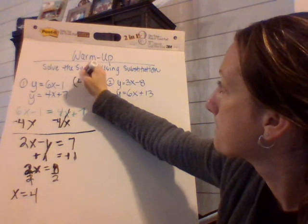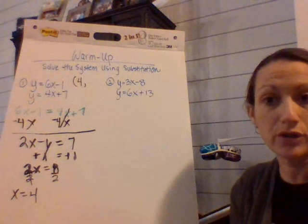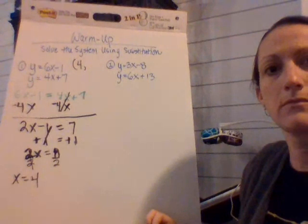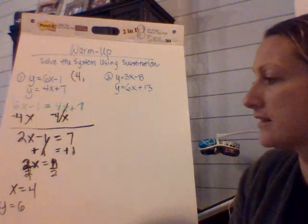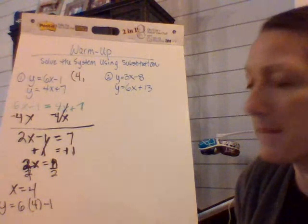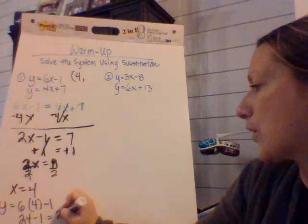How we get the y coordinate is we substitute it back into either equation for x. So I'm just going to use the top equation. We're going to do y is equal to six, in place of this x from the top I'm going to put four, and then minus one. Then six times four is 24 minus one is equal to 23.